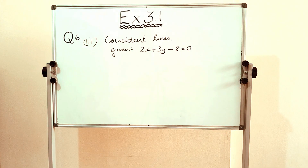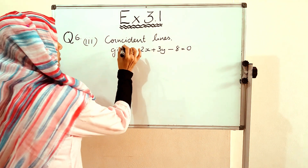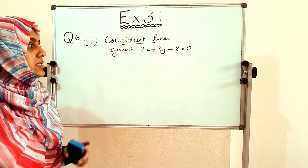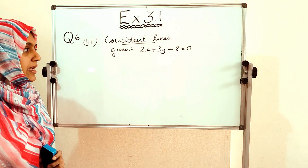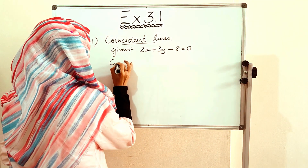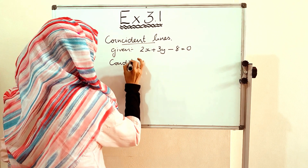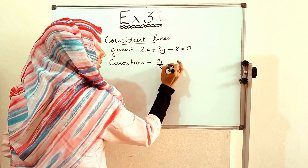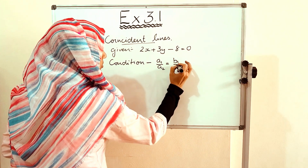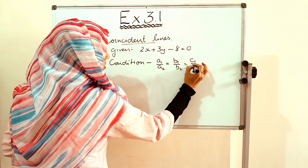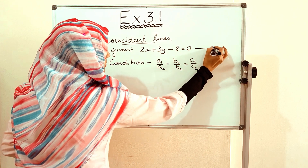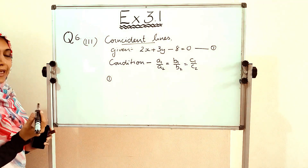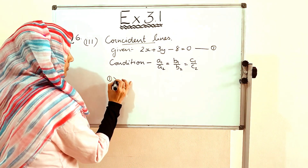Part 3 is coincident lines. The given equation is 2x + 3y − 8 = 0. The condition for coincident lines is a1/a2 = b1/b2 = c1/c2. To achieve this, multiply the entire equation by a non-zero constant — let us multiply by 3.